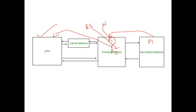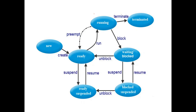In the ready state, processes are waiting for their chance for execution. Now let us see the next state — the running state. Processes are already waiting in the ready state in main memory for execution by the CPU. The operating system selects one of the processes from the ready state and sends it to the CPU for execution, based on scheduling algorithms.